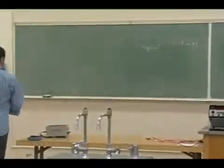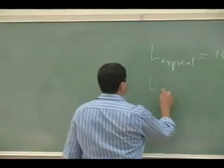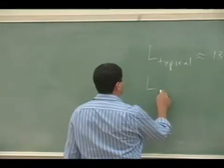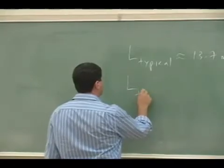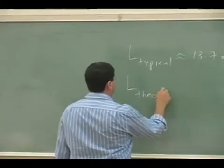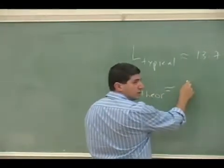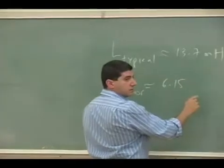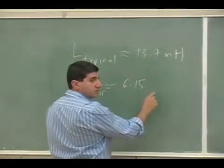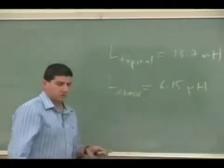It's probably pretty small, right? I can call that L theoretical for this one. We got what, 6 point... micro-Henry. Oh no, micro. Okay, so pretty small. So something like that.